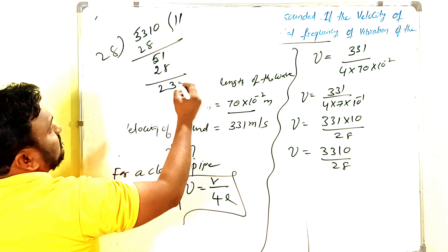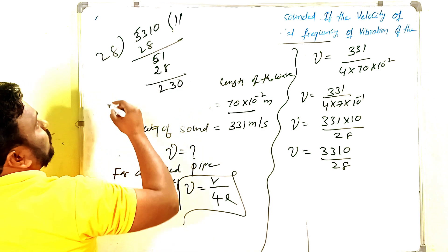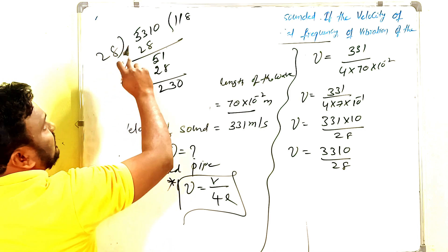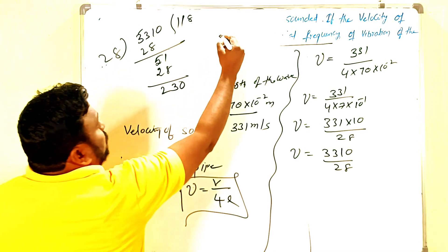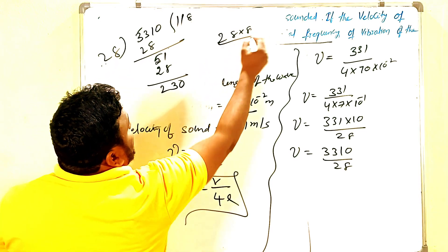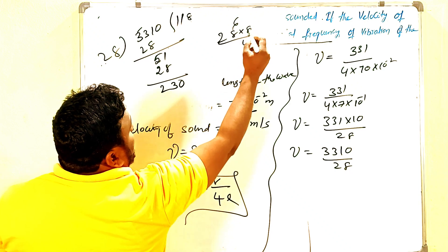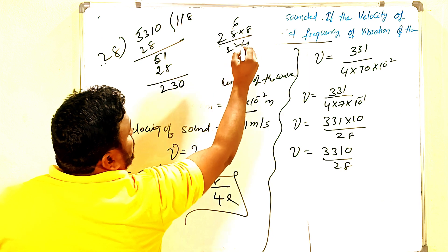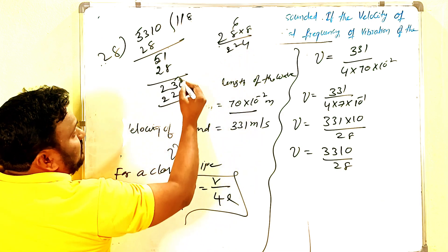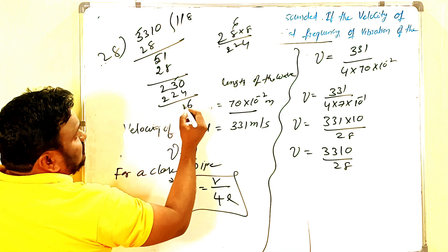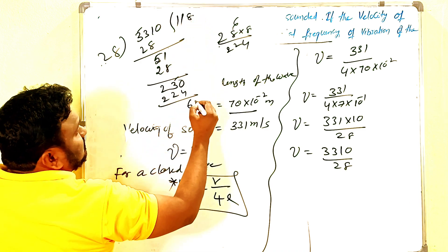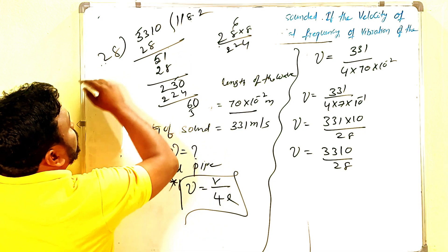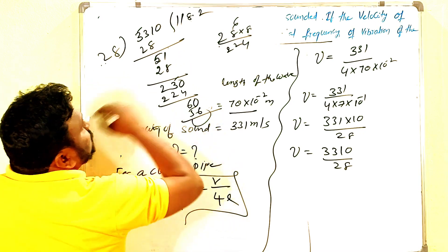230. 28 eights are 224. 230 minus 224 is 6. Then 0. Continue like this—22, 24, then 6. Then 0, then 256.